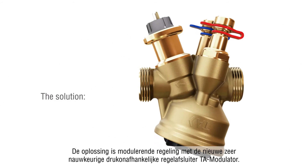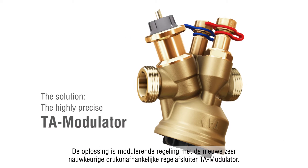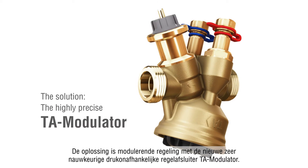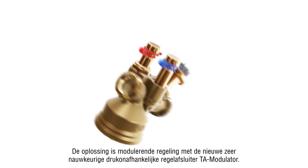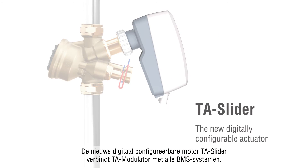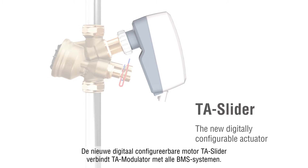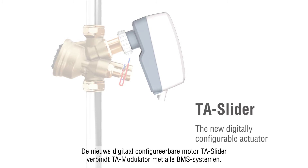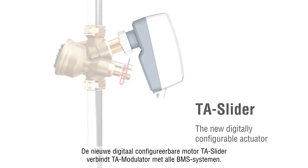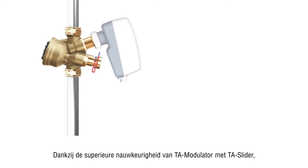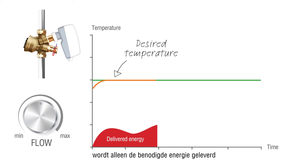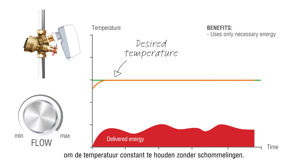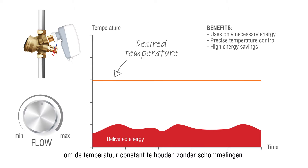The solution is modulating control with the new highly precise pressure independent control valve, TA Modulator. The new digitally configurable actuator TA Slider connects TA Modulator to all building automation systems. Due to the superior accuracy of TA Modulator with TA Slider, only the necessary amount of energy is delivered to keep the temperature constant without any oscillations.